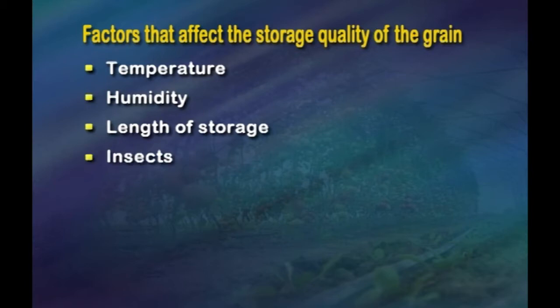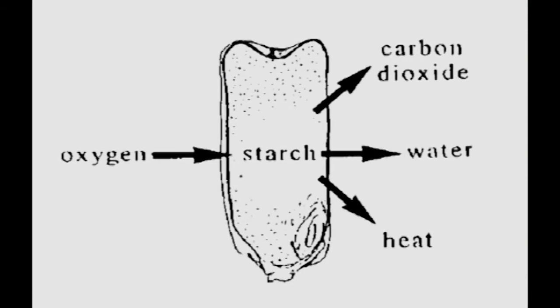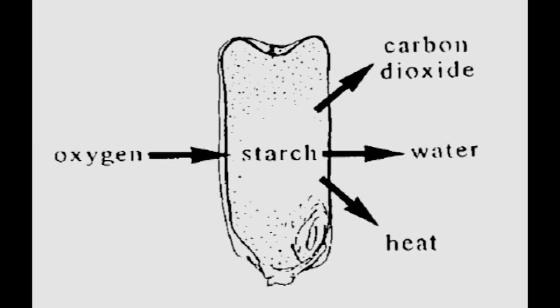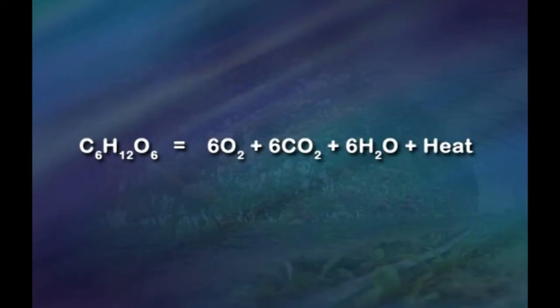Now we'll see the factors that affect the storage quality of the grain, which include temperature, humidity, length of storage, insects and pests, and respiration. In grain legumes, grains respire, taking in oxygen from the air and converting the nutrients stored in their cotyledons into heat, carbon dioxide and water in the form of moisture. These compounds are discharged into the atmosphere through the process of respiration, as illustrated by the general equation: carbohydrates are converted to oxygen, carbon dioxide, water and heat. The process also induces the growth of moulds and insect pests.